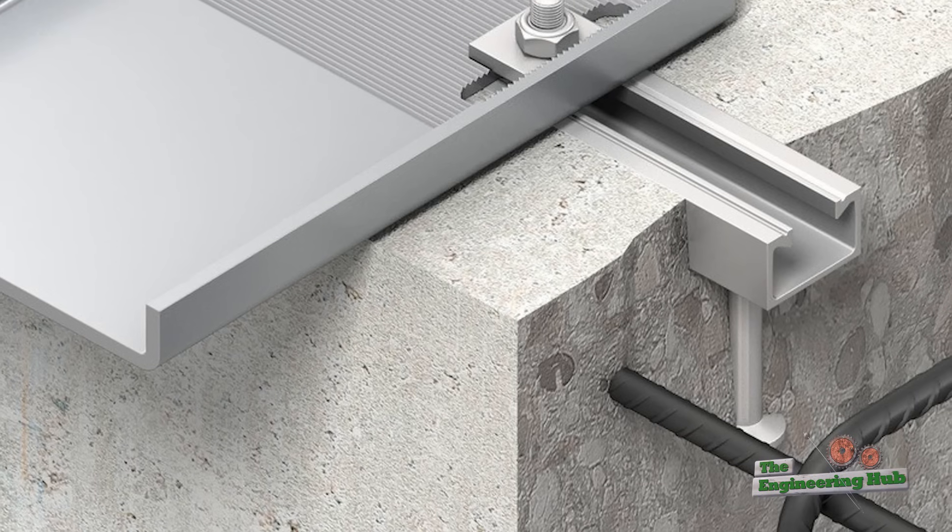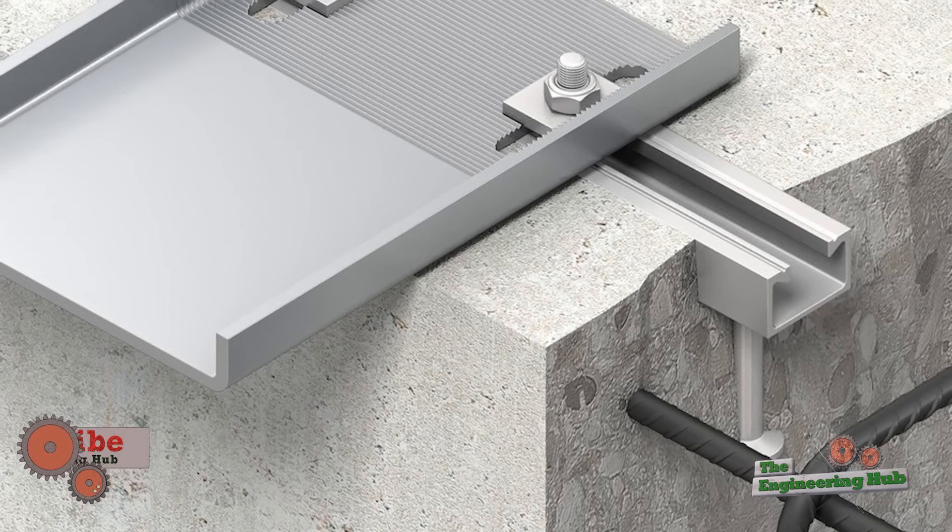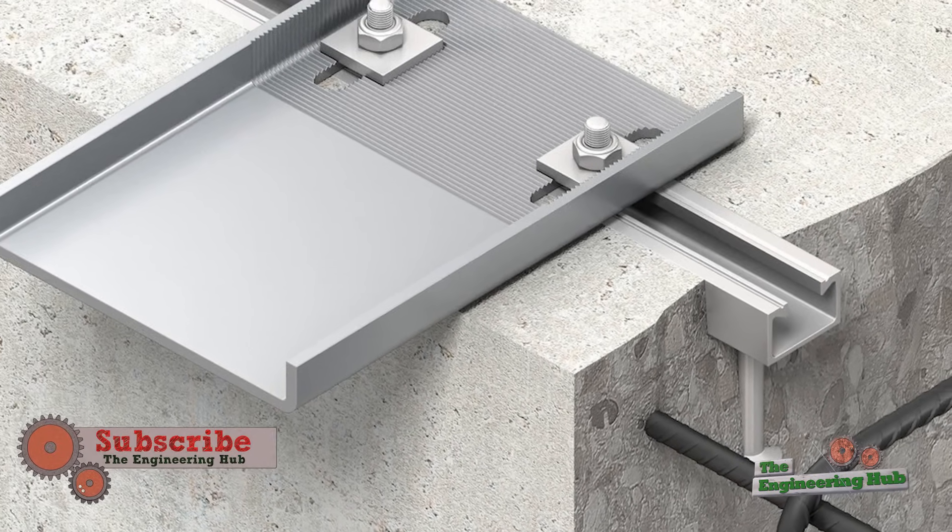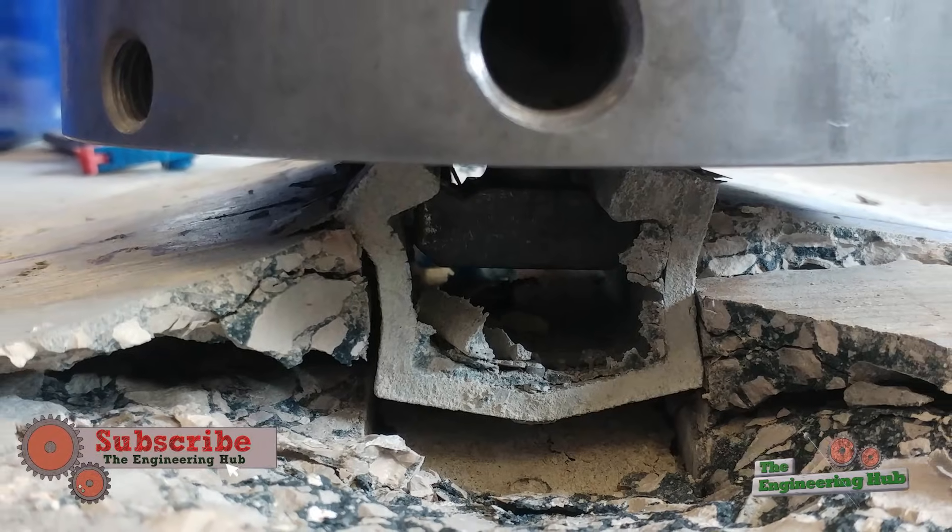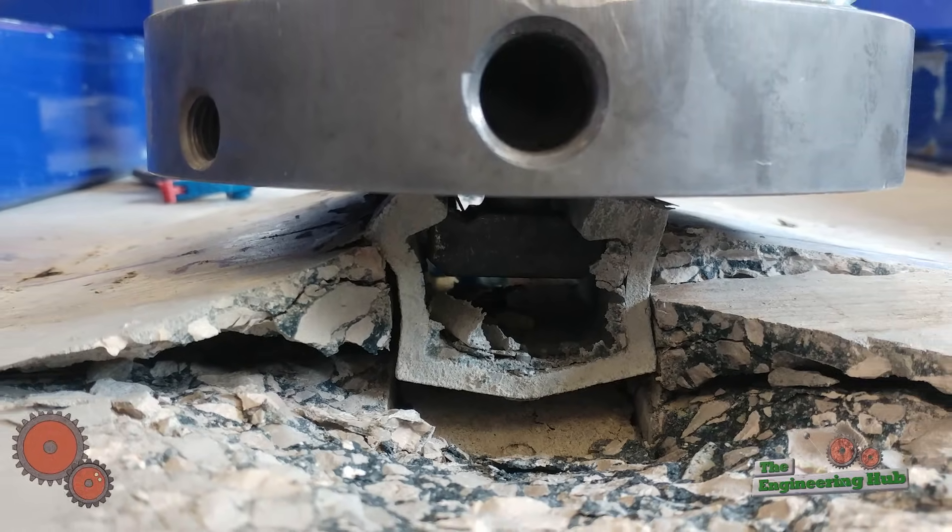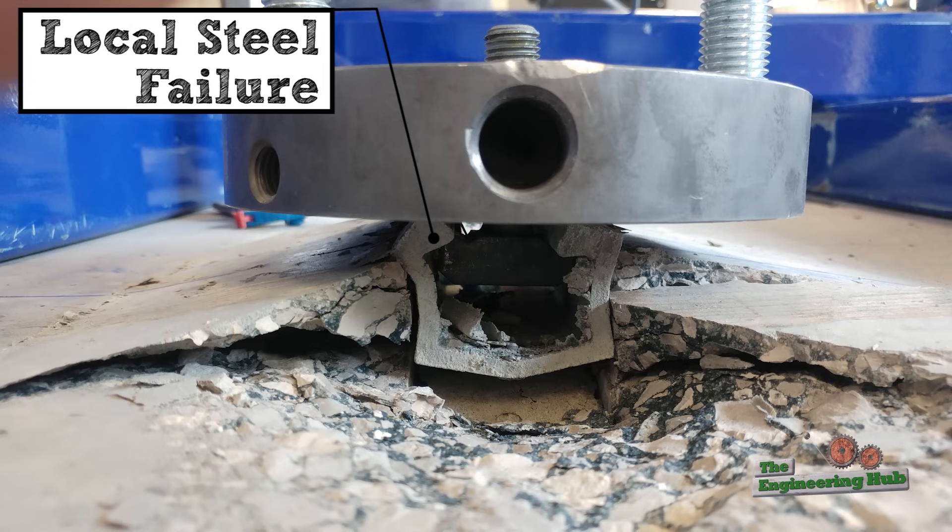In more complicated embeds, such as anchor channels, the steel flanges of the channel could also fail by prying open as shown here. This is a bending or flexural failure of the flanges caused by high tension loads locally.